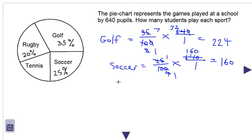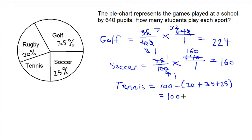Let's move on to tennis. The percentage for tennis is not given but we can find it by adding 35 to 25 to 20 and then subtracting from 100 percent. So we add 20, 35 and 25 and then subtract from 100 to get 20 percent for tennis.